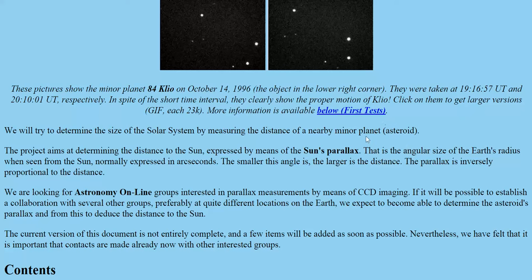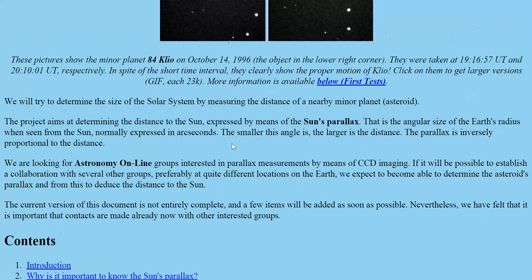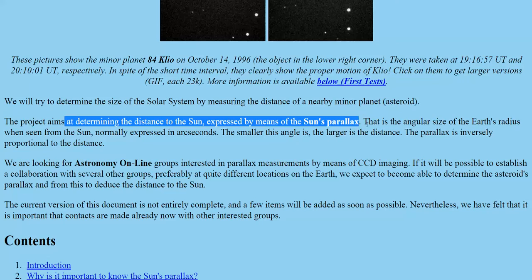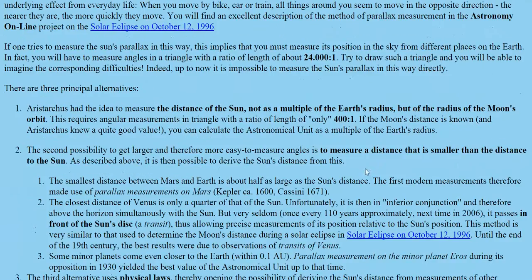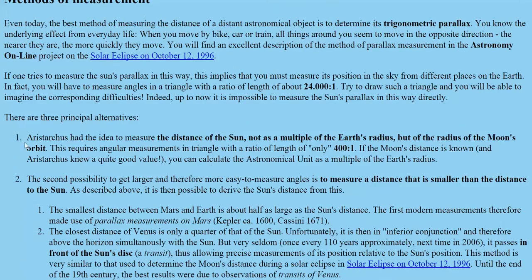That's because a planet is just something that moves through the sky — it's not necessarily a globe that rotates around the earth. I know the IAU has some specific criteria for what they call a planet. So, we're determining the distance to the sun by using the sun's parallax. Aristarchus had the idea to measure the distance of the sun not as a multiple of the earth's radius, but of the radius of the moon's orbit — so if we know the moon's distance, you can calculate the astronomical unit as a multiple of that.